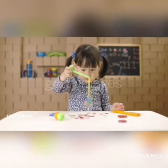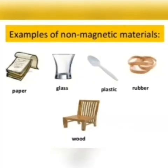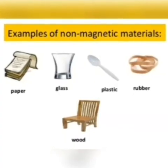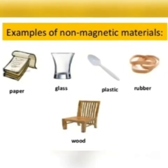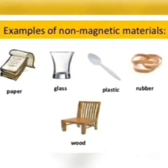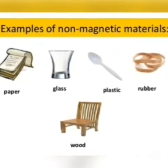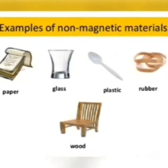Magnets do not attract other materials like wood, book, copper, aluminium, brass, plastic, rubber, glass, etc.